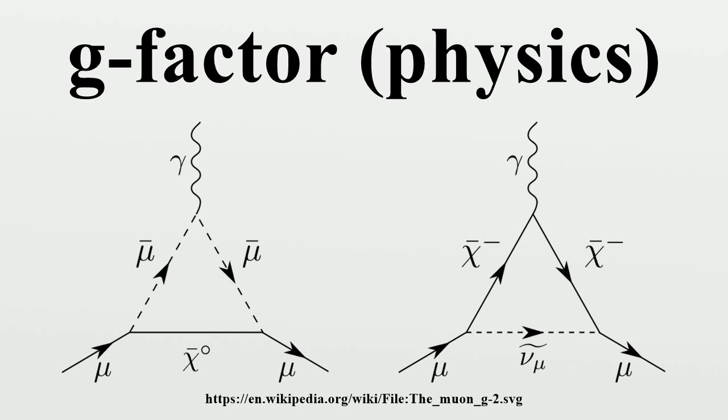g_e, defined by: where μ_s is the magnetic moment resulting from the spin of an electron, s is its spin angular momentum, and μ_b is the Bohr magneton. In atomic physics, the electron spin g-factor is often defined as the absolute value or negative of g_e.